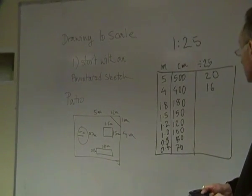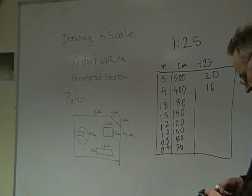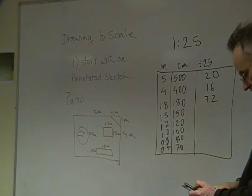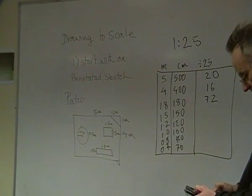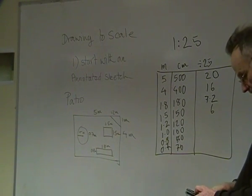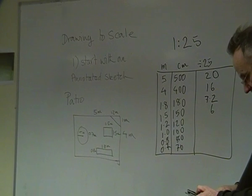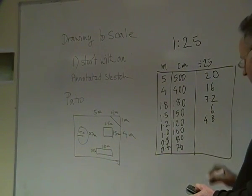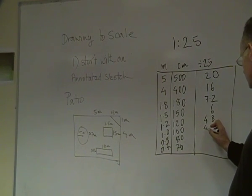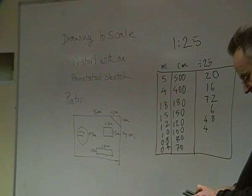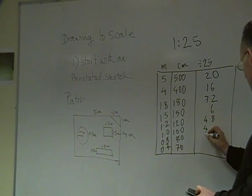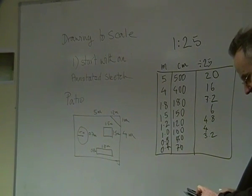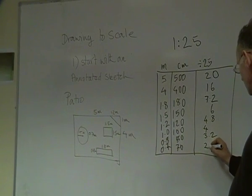180 divided by 25 equals 7.2. 150 divided by 25 equals 6. 120 divided by 25 equals 4.8. 100 divided by 25 equals 4. 80 divided by 25 equals 3.2, and 70 divided by 25 equals 2.8.